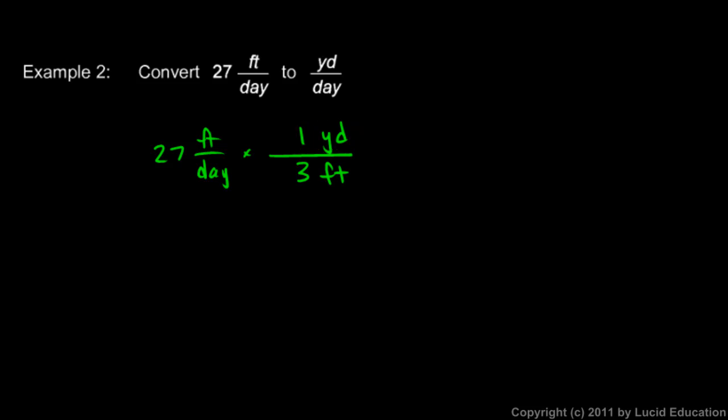Now one yard is equal to three feet, so this fraction is therefore equal to one. So I'm just multiplying by one. So it doesn't really change the speed any. But it does change the units because the feet here cancel out, leaving me with yards in the numerator and day in the denominator.